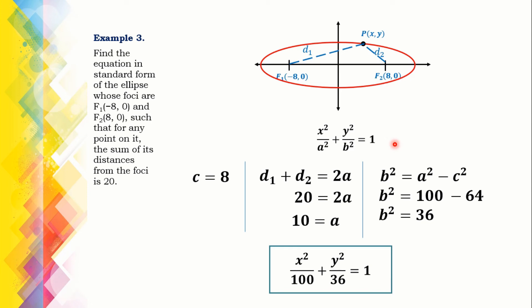For any point on the ellipse, the sum of its distances from the foci is 20. That is, d1 plus d2 equals 20, which is also equal to 2A. Simplifying, A equals 10. The standard form needs A squared and B squared. Using B squared equals A squared minus C squared, B squared equals 36. Hence, the equation of the ellipse is x squared over 100 plus y squared over 36 equals 1.